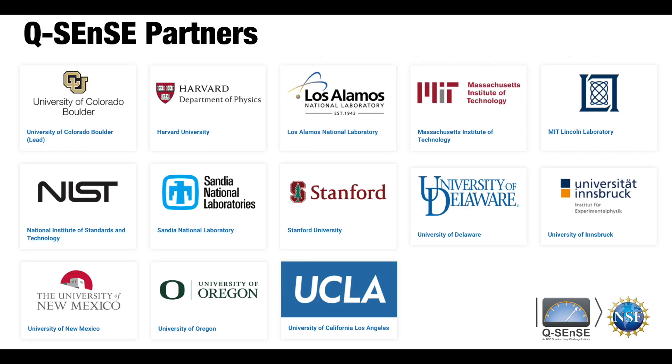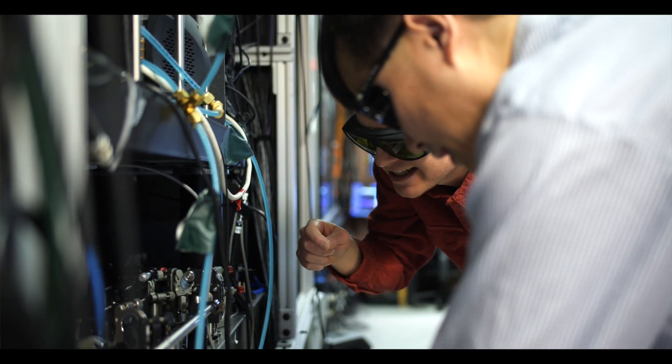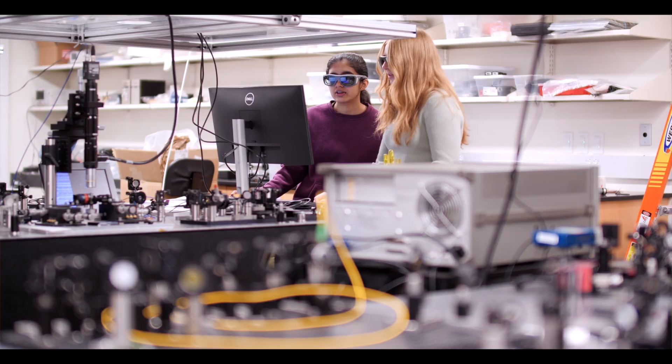Q-Sense, in fact, represents a nationwide collaboration. We have eight universities, three national labs, and one national institute, all working together at the cutting edge of science and technology. Quantum science is a continuous spectrum ranging from quantum sensing to quantum information processing and quantum networking. By focusing on quantum sensing, we hope to realize some of the near-term goals that quantum revolution will bring to our nation.